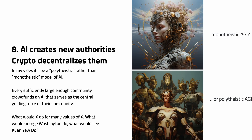People talk a lot about AGI with an implicit assumption there will be one monotheistic superintelligence. But it's quite possible that, if we get decentralized funding and evaluation working, every community could have its own oracle — a polytheistic AGI. You could ask 'what would X do?' for many different values of X: what would George Washington do, what would Lee Kuan Yew do? Different societies and communities would have their own AGI, query it for citations, and it could even give on-chain citations — pulling together many of the concepts from this talk.